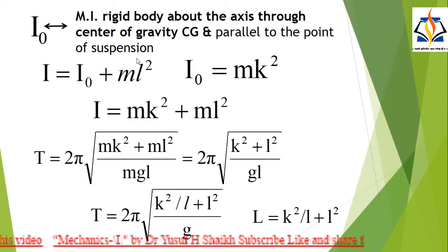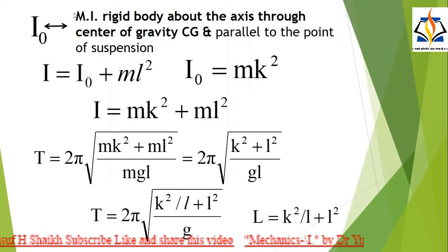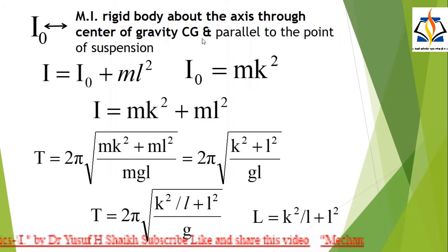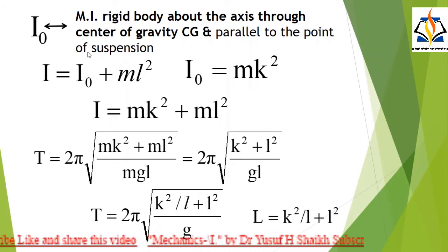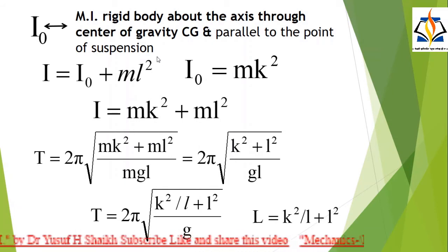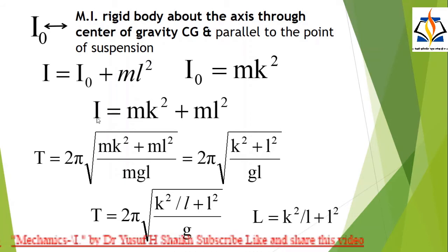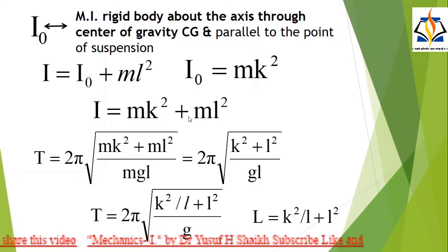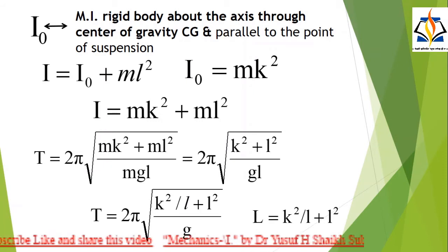If I₀ is the moment of inertia of a rigid body about the axis through the center of gravity and parallel to the axis of suspension, then by using the parallel axis theorem, I = I₀ + ML², where I₀ = Mk². Therefore, I = Mk² + ML². Substituting these values of I into the equation for the time period, we get the period of oscillation.